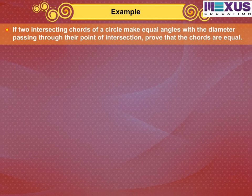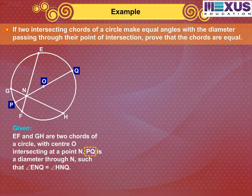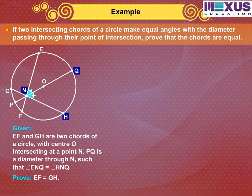If two intersecting chords of a circle make equal angles with the diameter passing through their point of intersection, prove that the chords are equal. Given that EF and GH are two chords of a circle with center O intersecting at a point N, PQ is a diameter through N such that angle ENQ is equal to angle HNQ. You have to prove that EF is equal to GH.